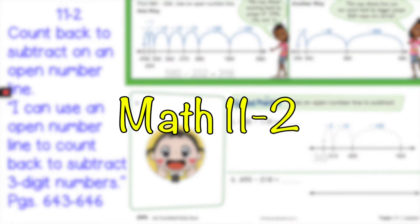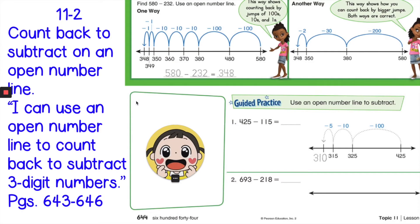Today we're going to be doing lesson 11-2. If you could open up to page 644, you're going to count back to subtract on an open number line. I'd like you to repeat after me: I can use an open number line to count back to subtract three digit numbers.